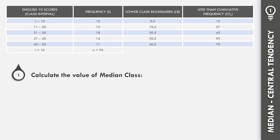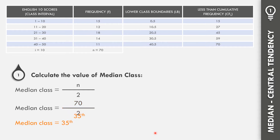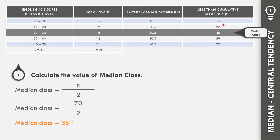Let us calculate now the median class. The formula: median class equals N over 2. With N equal to 70, we get 70 divided by 2, which is 35. Since 35 falls between cumulative frequencies 27 and 45, we choose 45. So the median class is the interval from 21 to 30.